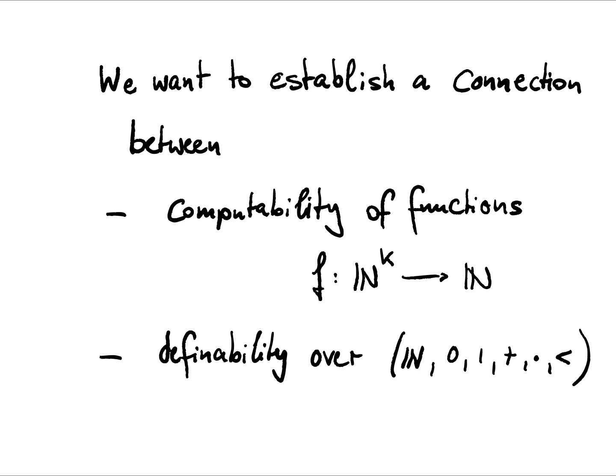In order to do that, we first need to level the playing field, so to say, because right now the types here are very different. Here we're looking at Turing machines and functions, here we're actually looking at formulas. So the first thing for us will be to code formulas as numbers, so we can bring them over into the realm of the natural numbers.